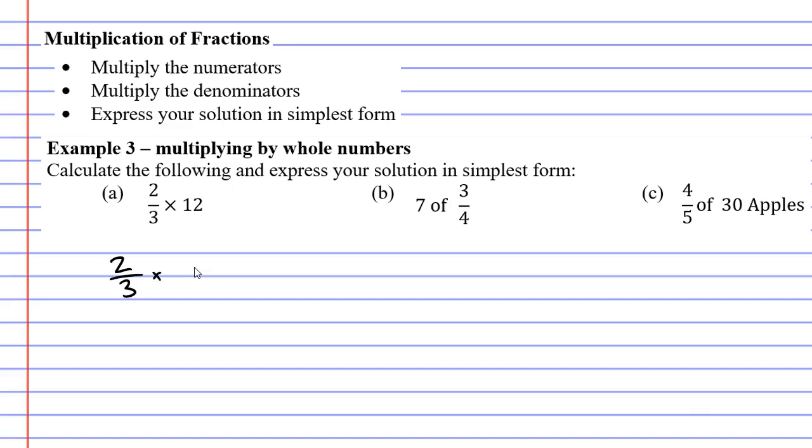And we turn the whole number into a fraction. 12 is the same as 12 over 1. Now in case you don't know why, 12 over 1 is the same as 12 divide 1, and 12 divide 1 equals 12. So whenever you have a whole number you can just put it over 1.